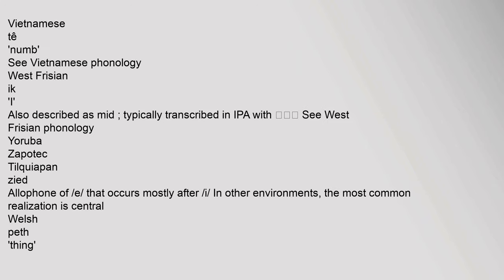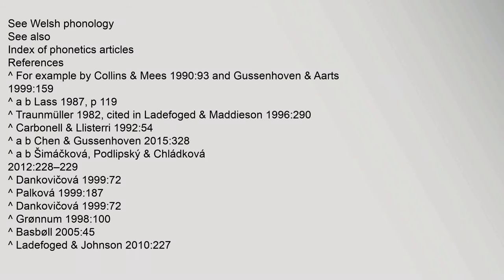Vietnamese: see Vietnamese phonology. West Frisian: also described as mid, typically transcribed in IPA — see West Frisian phonology. Yoruba. Zapotec Tilquiapan: allophone of 'e' that occurs mostly after 'i'; in other environments the most common realization is central. Welsh: see Welsh phonology. See also: index of phonetics articles.